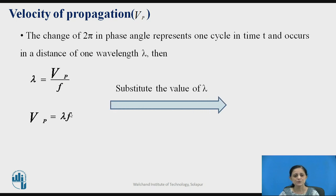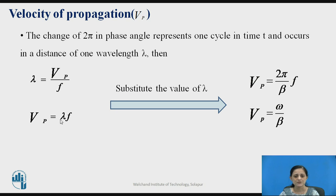Substituting the value of lambda as 2 pi by beta into the equation: Vp equals 2 pi by beta times f. This equation can be written as omega by beta, since 2 pi times f is the angular frequency denoted with omega. Therefore, the equation for Vp equals omega by beta.